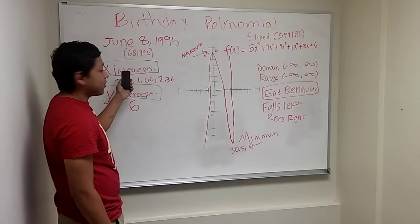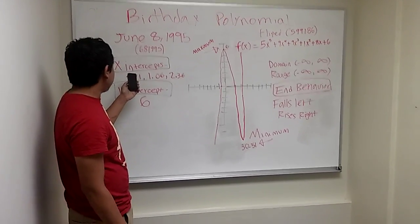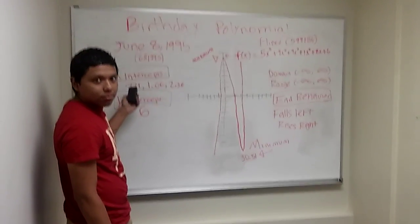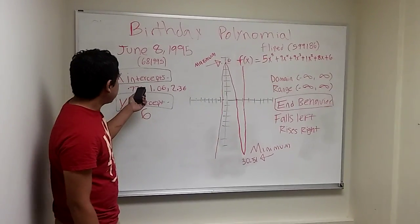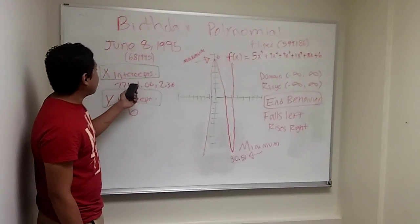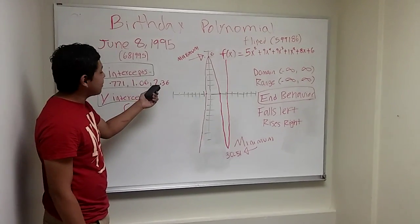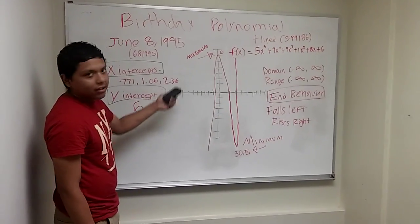The x-intercepts, there's actually three x-intercepts. They're not exact numbers, but they're decimal points. The first one is 0.771, the second one is 1.06, and the third one is 2.36.